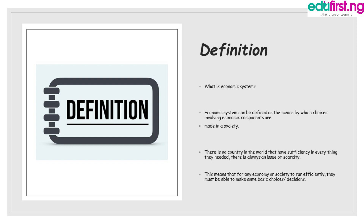You will agree with me that there is no economy or country in the world that has sufficient resources for everything they need. There is always an issue of scarcity — scarcity of resources — such as lack of electricity, lack of adequate hospitals, and so on. This means that for any economy or society to run efficiently and smoothly, they must be able to make certain basic economic choices and decisions.